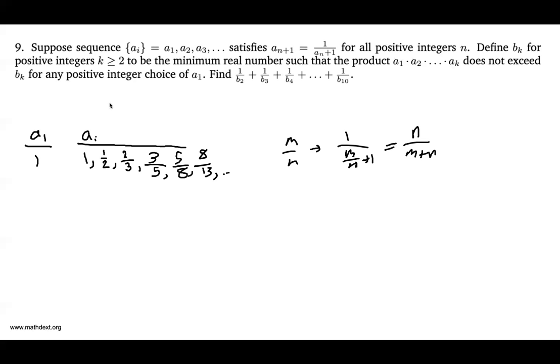All right, with that in mind, why don't we try something else? Let's try a sub 1 is equal to 2, okay? In this case, our first term is 2. Our second term is 1-thirds.